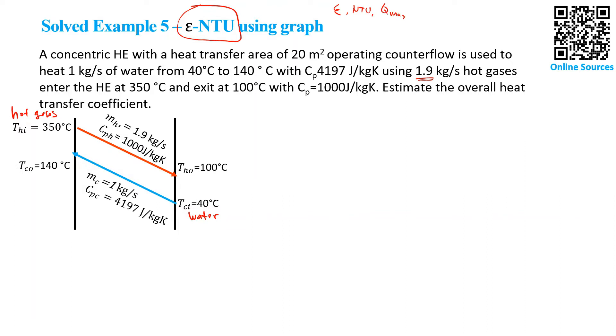Based on the graph, we need to know how to find out the epsilon, the equation for NTU, and we also need to find out Tmax. The first thing we need to find is what is the delta Tmax. Delta Tmax is THI minus Tci, which equals 310°C.